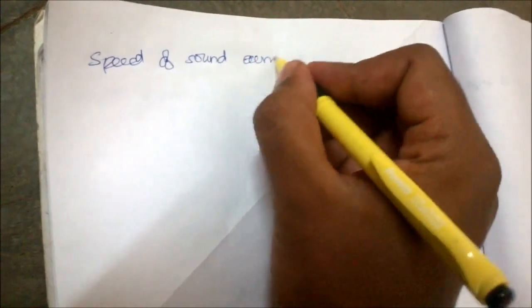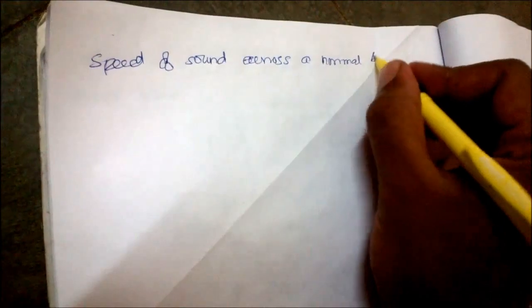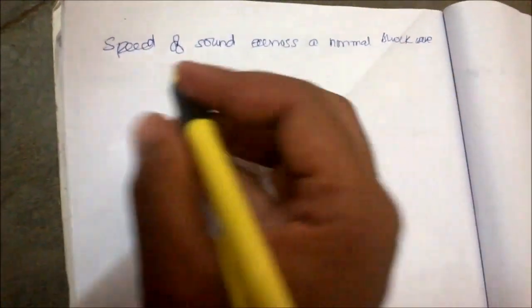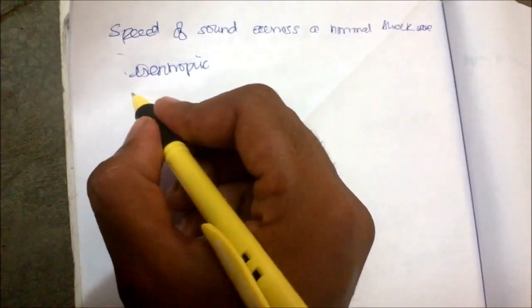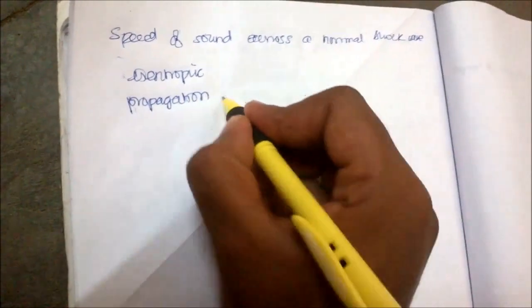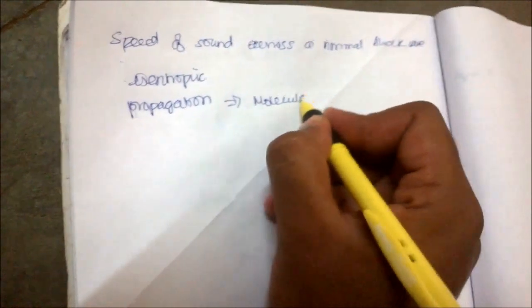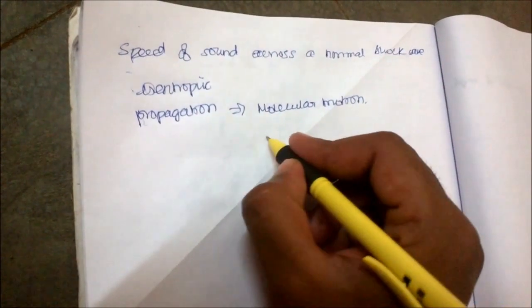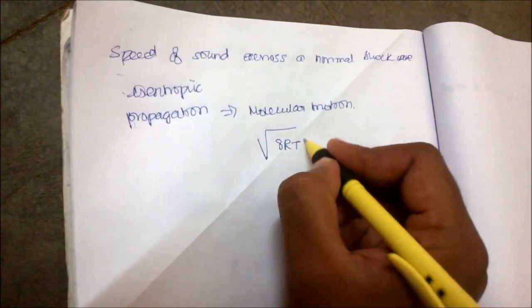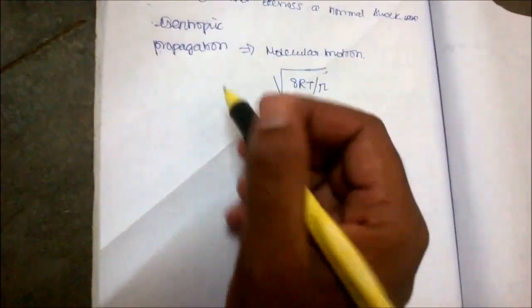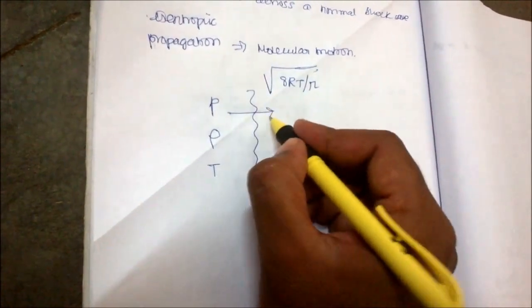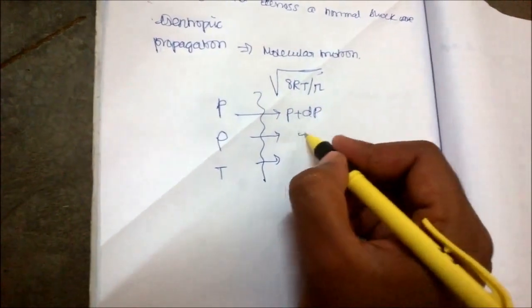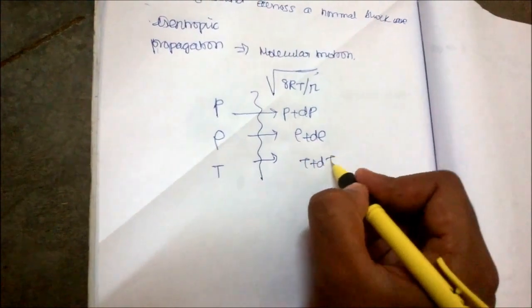Let us see about the speed of sound across a normal shockwave. Take the flow as isentropic. Propagation of sound can always be given by molecular motion: molecule velocity is equal to √(8RT/π). Let us consider the functions — pressure, density, and temperature — changing as P+dP, ρ+dρ, and T+dT across the shockwave.